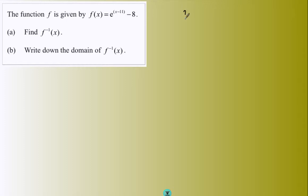The standard method for inverse functions, what we do is we write y equals. Then we simply swap the x for the y. And to see our inverse function properly, we make y the subject.